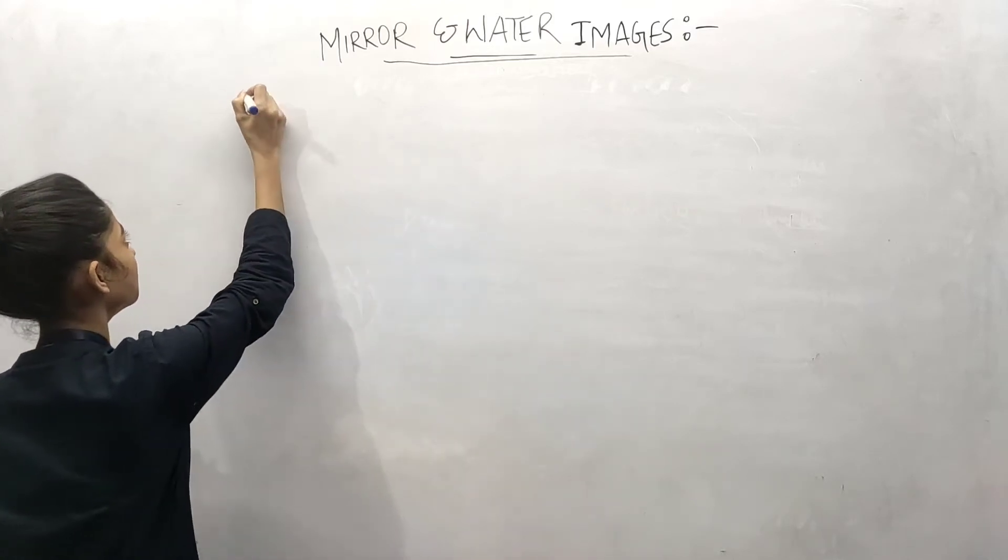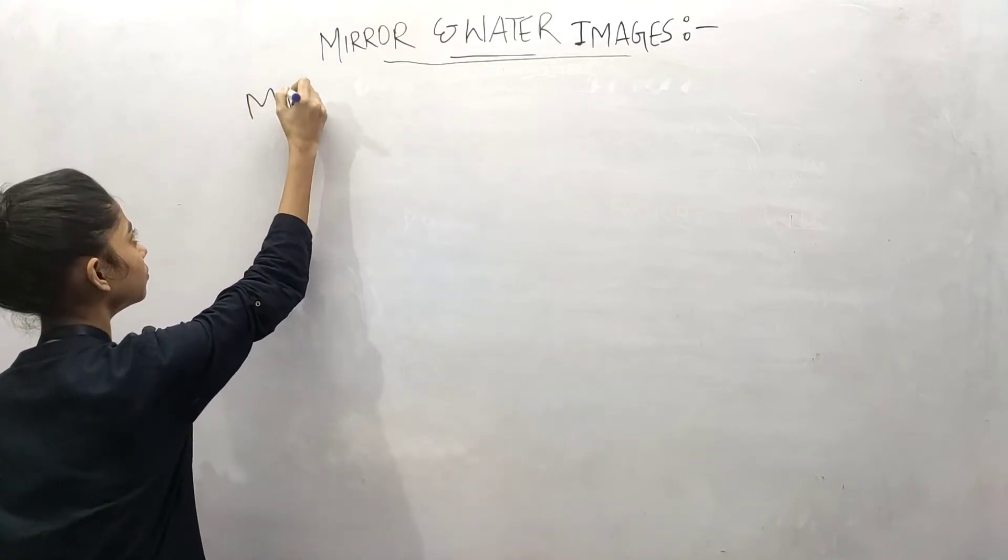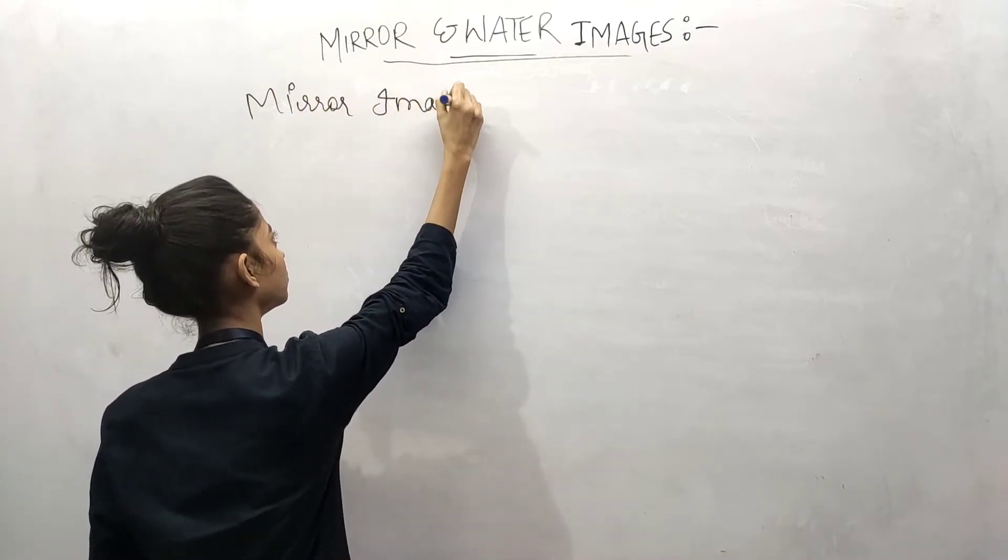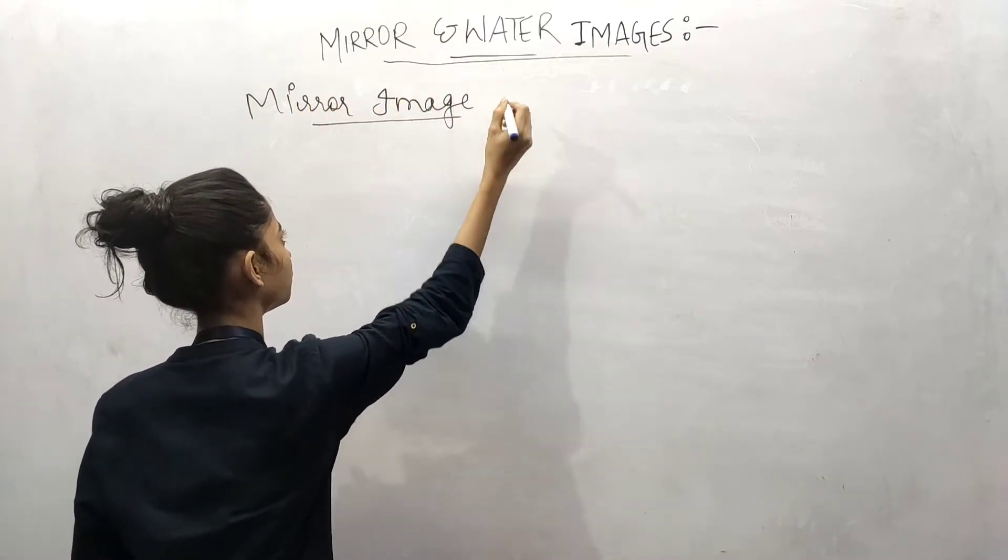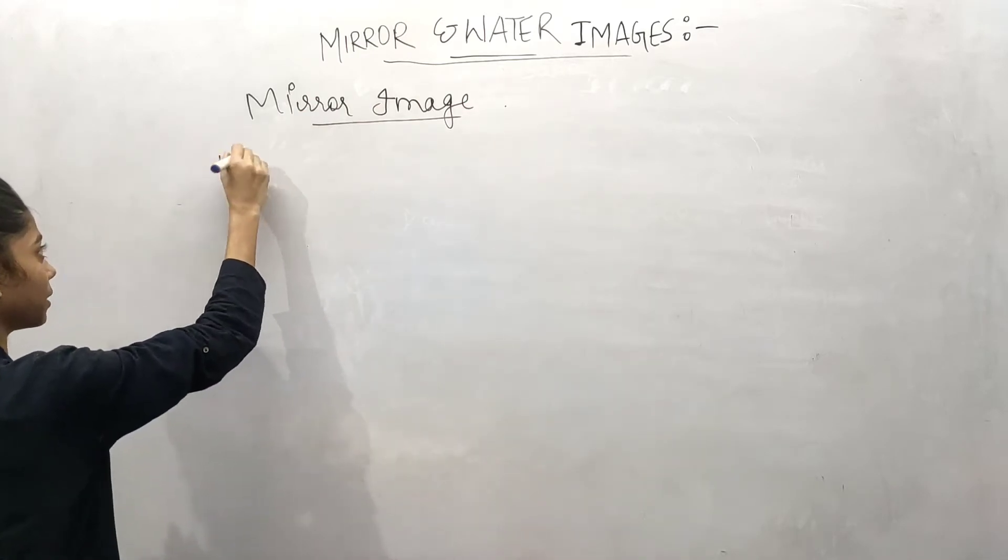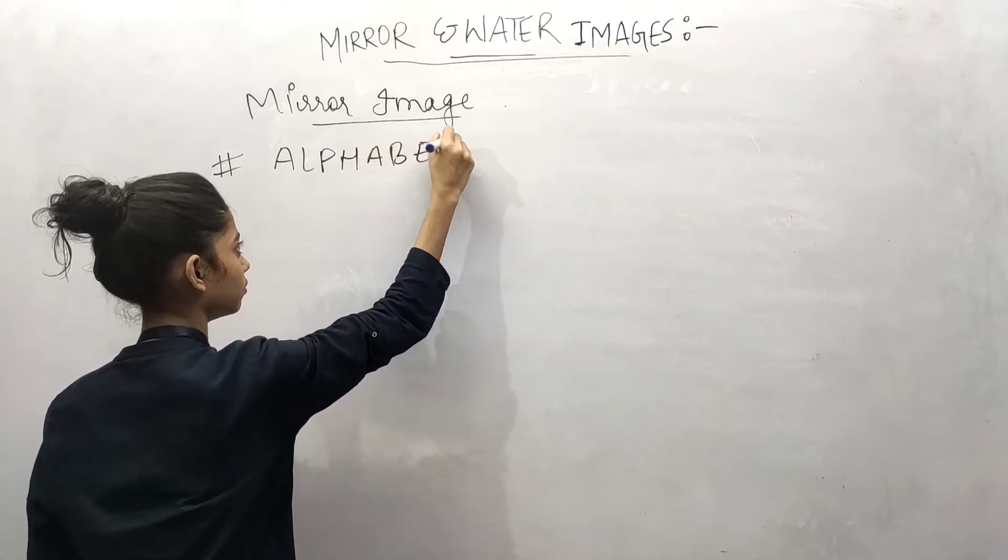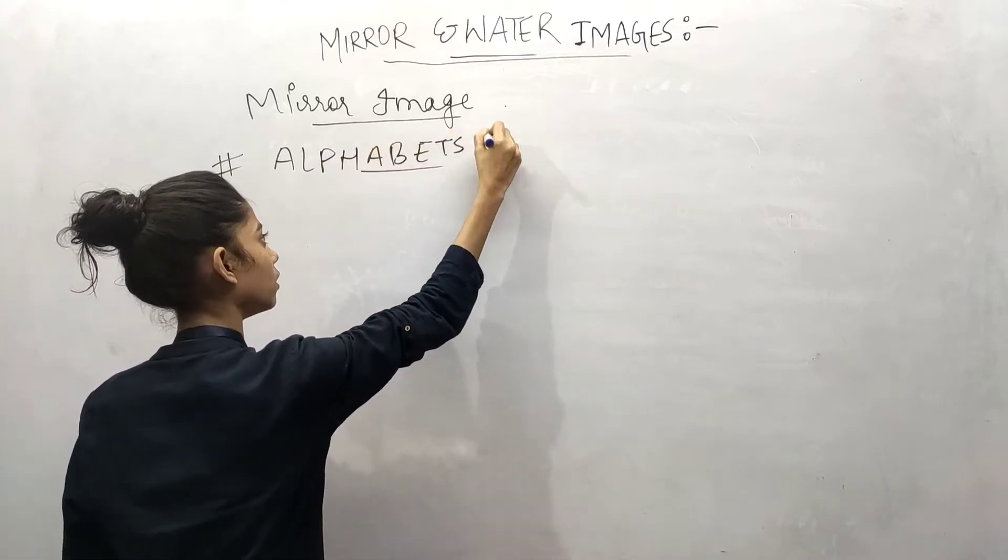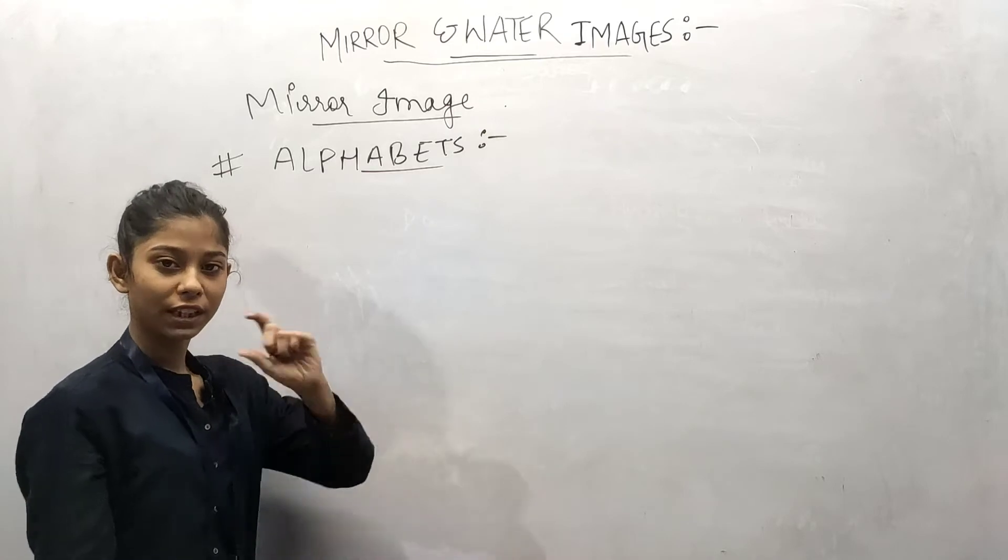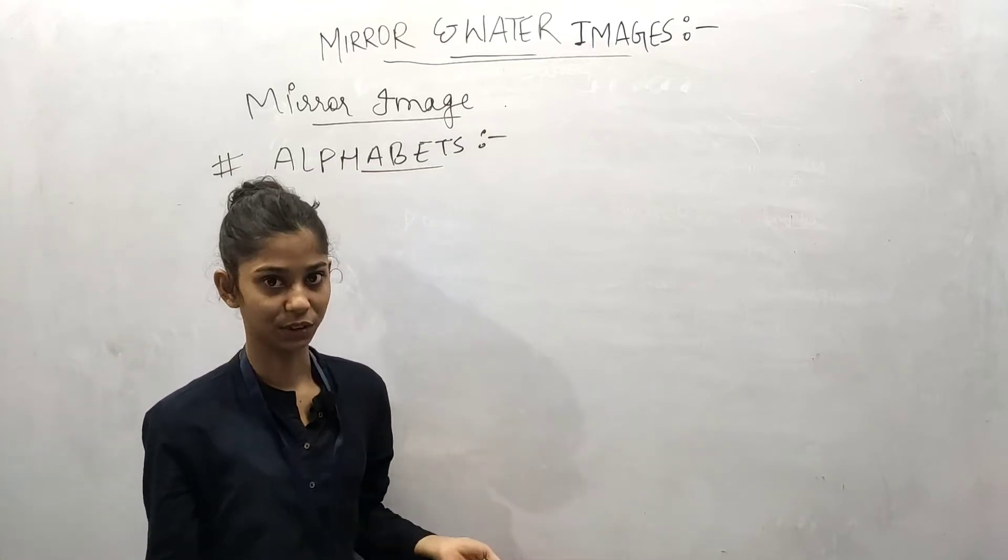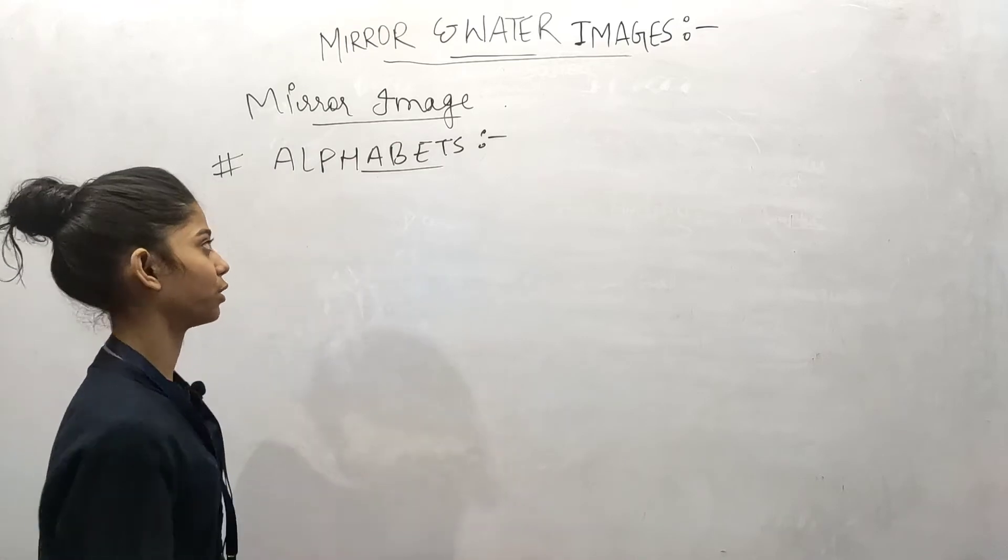First of all, the mirror image. If you see the alphabet mirror image, note it down. Because if you read one or two times, it will be memorized easily. This is very easy.